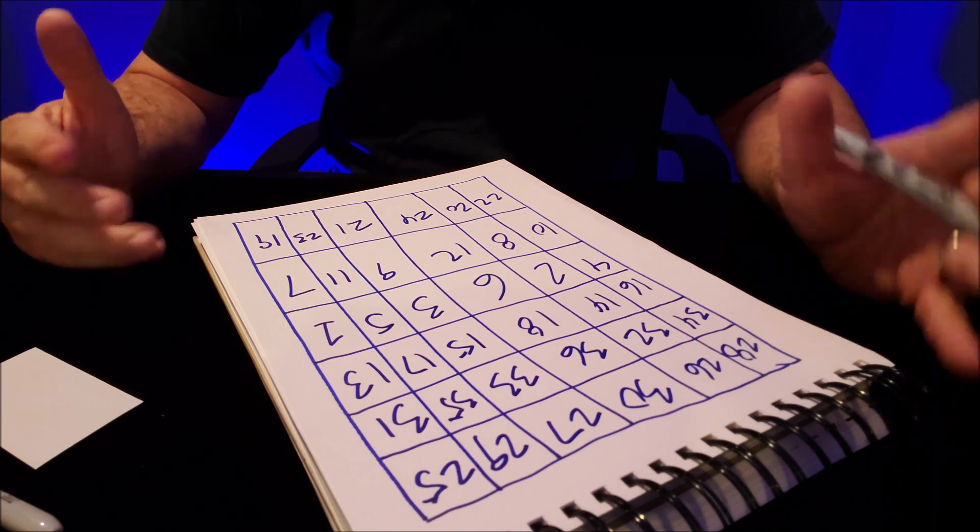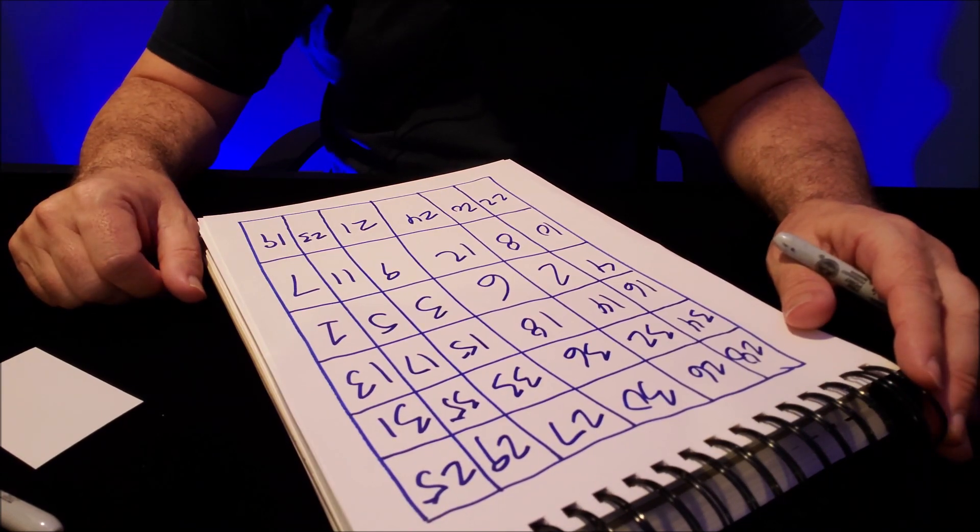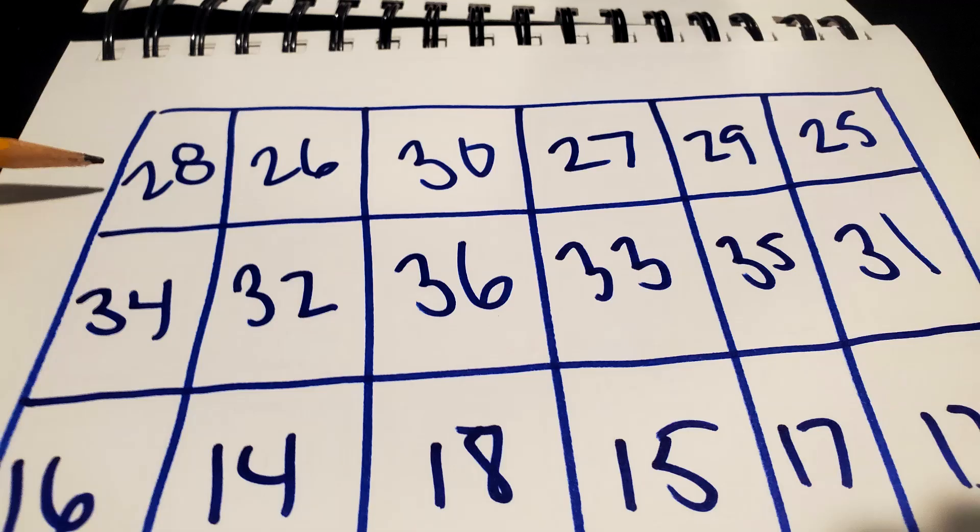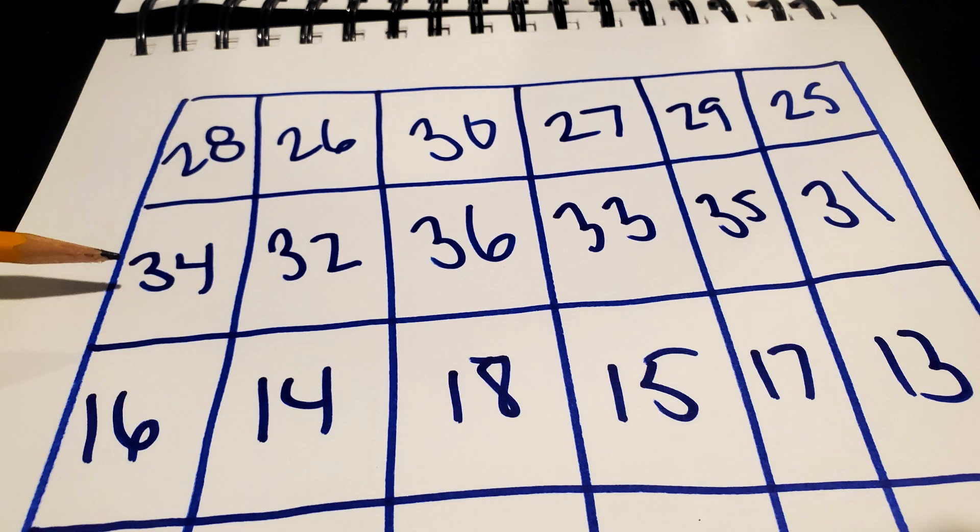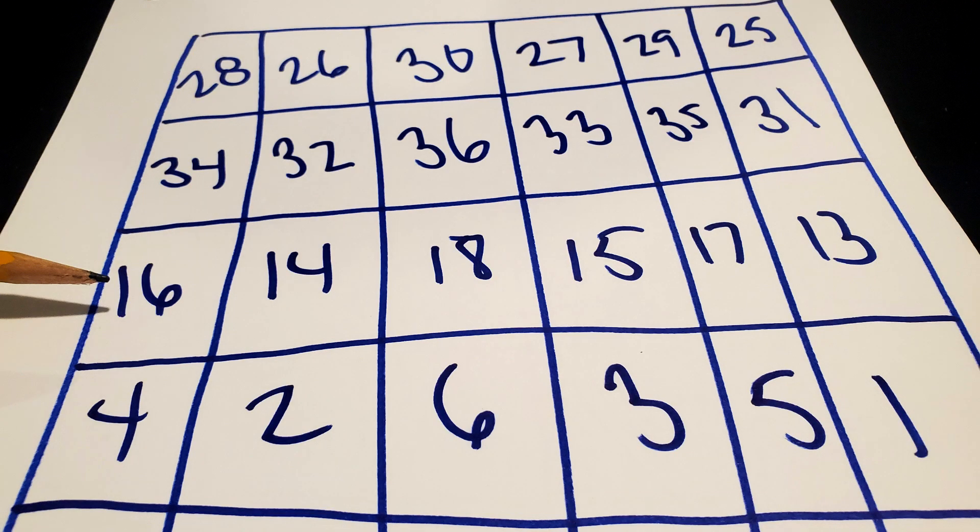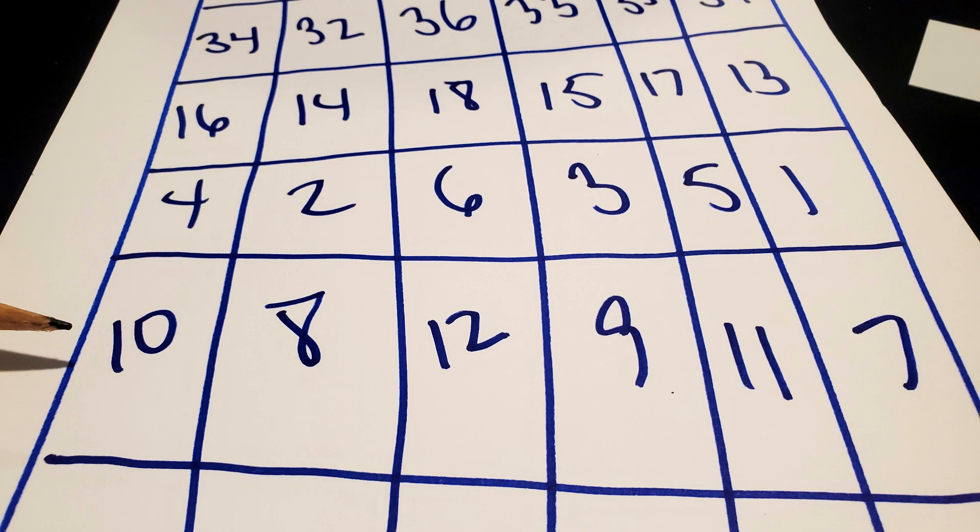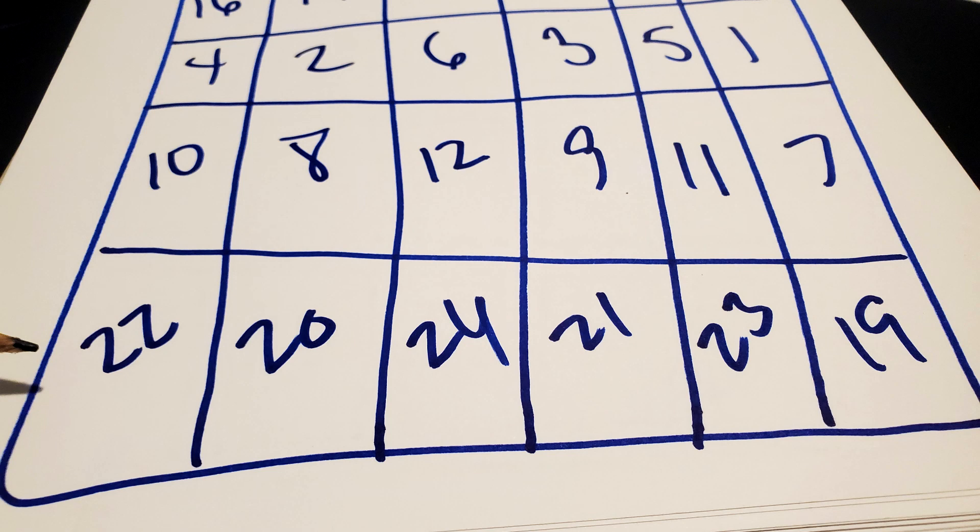When you're all done, it should look just like this. The top row is 28, 26, 30, 27, 29, and 25. Row number two is 34, 32, 36, 33, 35, and 31. Row three is 16, 14, 18, 15, 17, and 13. The next row is 4, 2, 6, 3, 5, 1. Second to the last row is 10, 8, 12, 9, 11, 7. And the bottom row is 22, 20, 24, 21, 23, and 19. So it should look just like that.